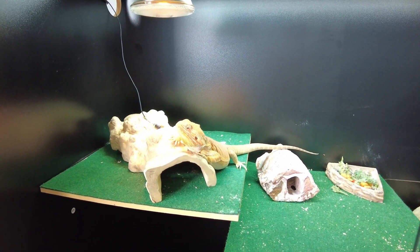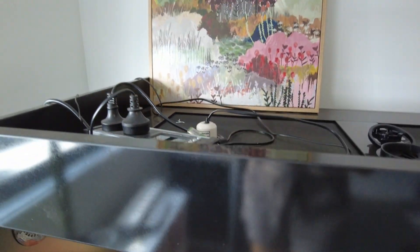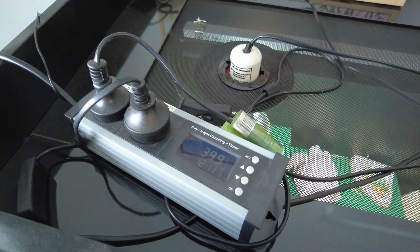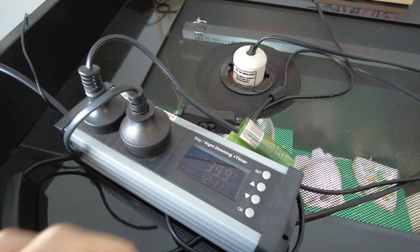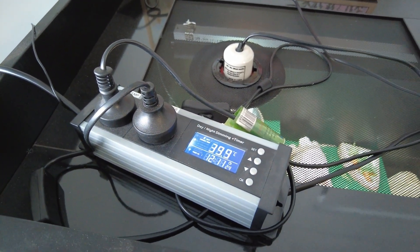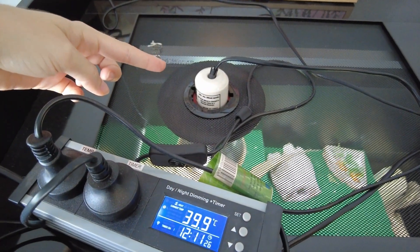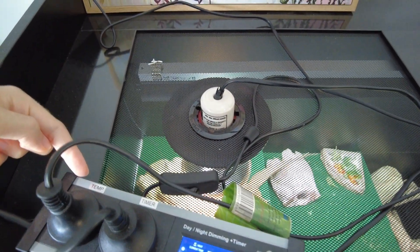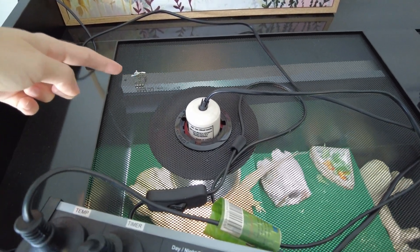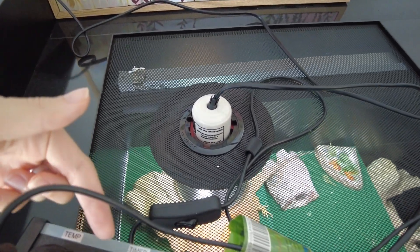So the first thing that you're going to want to do is get your day and night dimming timer and you're going to want to plug this in because we need it to be powered so that we can edit our settings. You're going to plug your heat lamp into the temperature socket and your UVB light is going to be plugged into the timer socket.